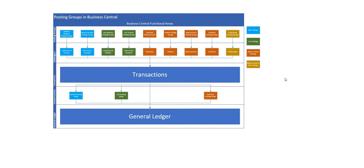At the top of the diagram we have posting groups, and I've put in some of the different posting groups within Business Central. In the first section I've got general business posting groups, general product posting groups, VAT business, VAT product, customer, vendor, bank account posting groups, and then inventory and fixed asset posting groups.